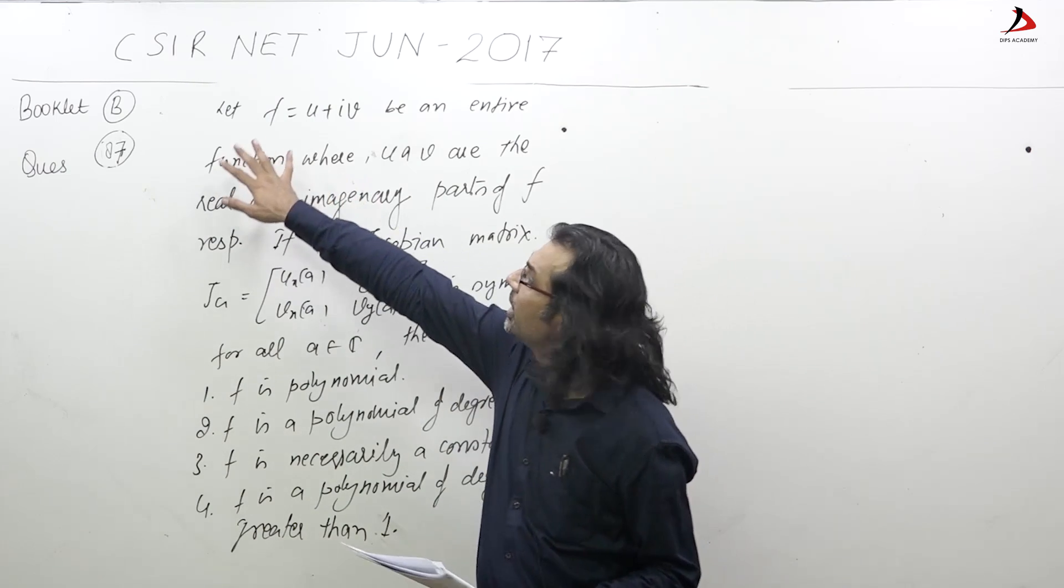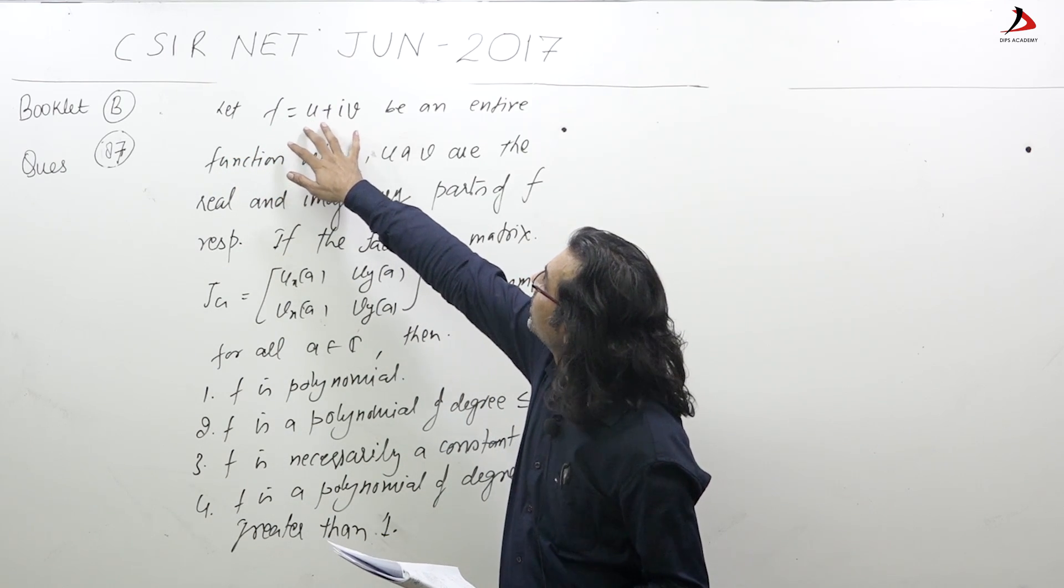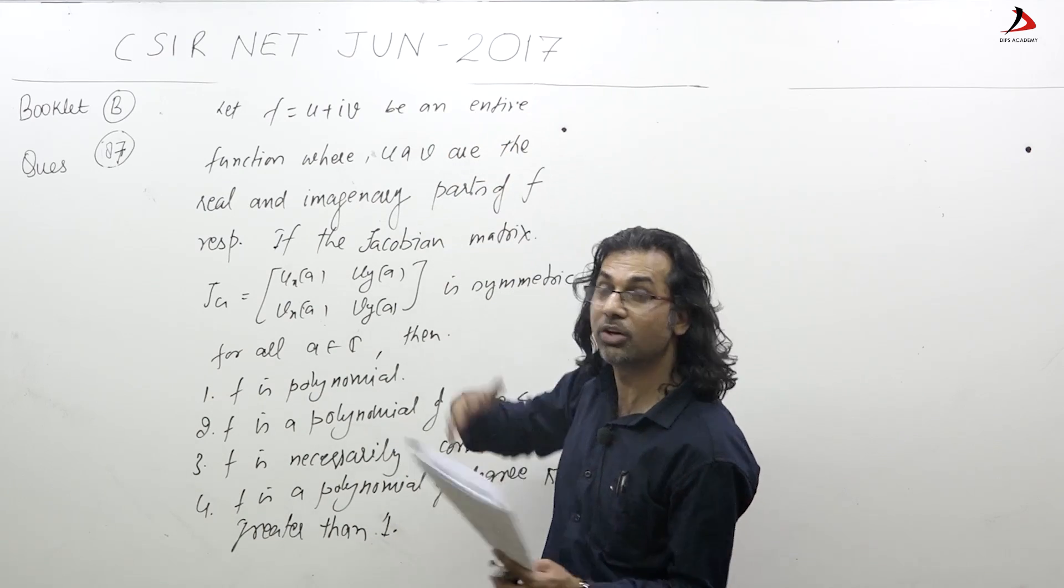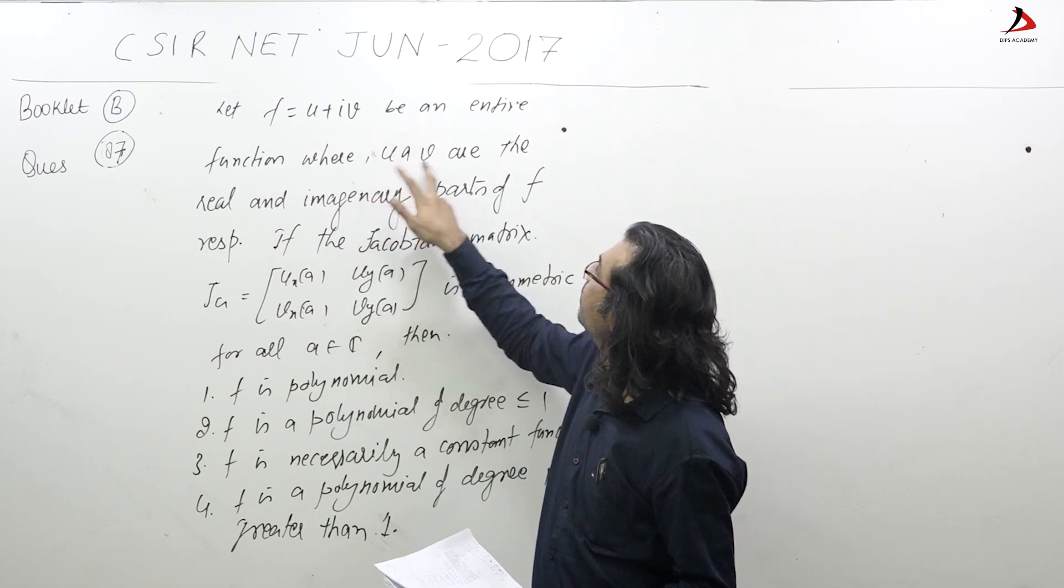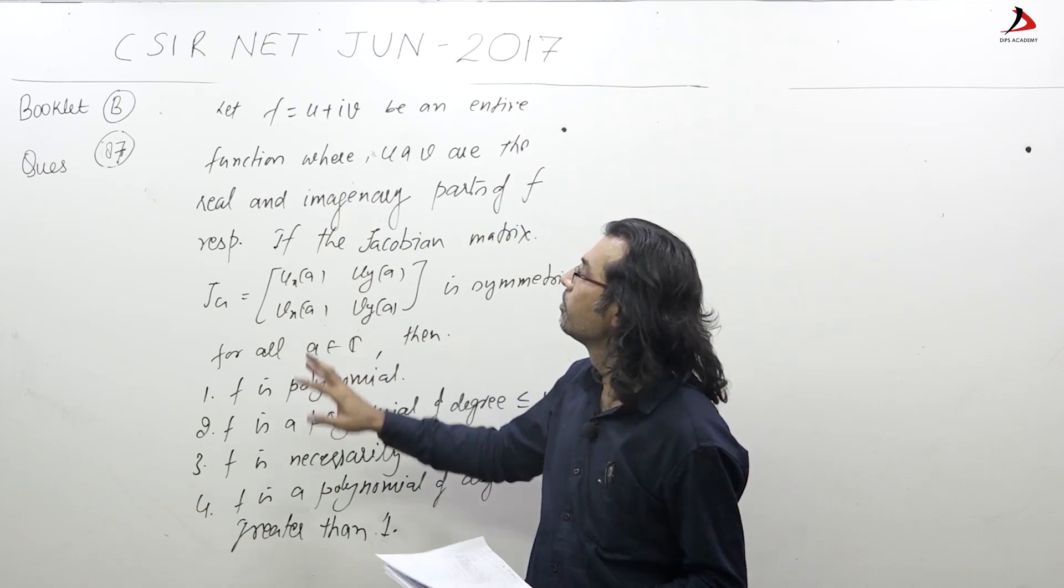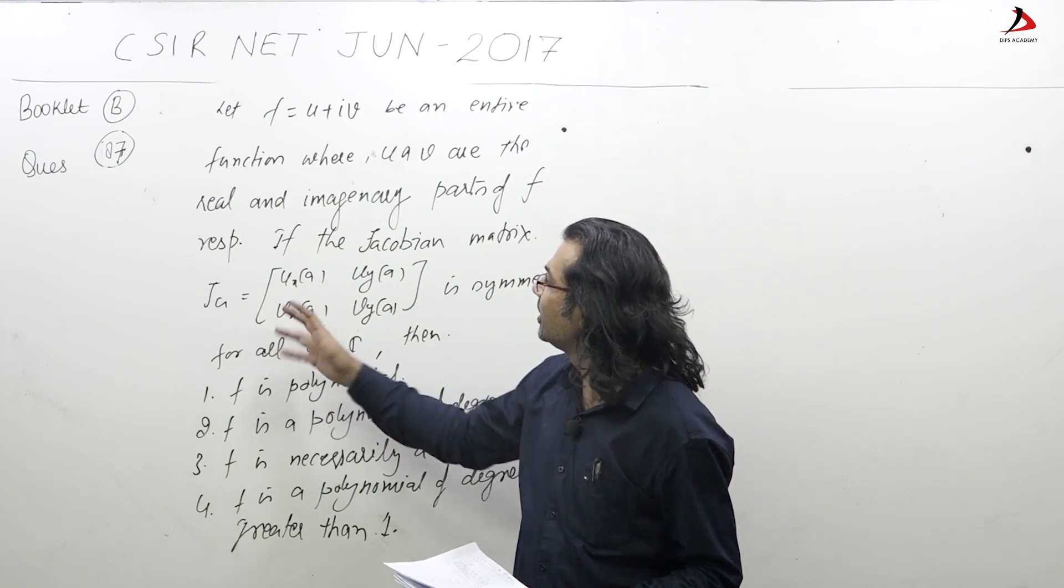Here I read out the question. Let f = u + iv be an entire function - and the word entire function means analytic on C - where u and v are the real and imaginary parts of f respectively.